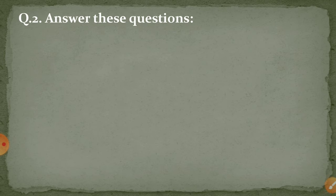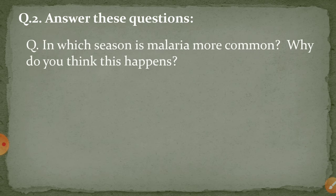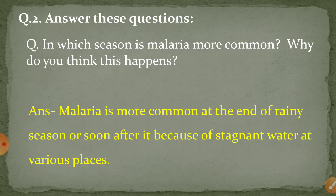Question number two: answer these questions. In which season is malaria more common, and why do you think this happens? Koon se season mein malaria zyada dikhayi deta hai? Malaria is more common at the end of the rainy season or soon after it, because of stagnant water at various places. Malaria jo hai rainy season ke end mein jaake zyada dikhayi deta hai, kyunki us waqt ruka hua paani jagah jagah ikattha milta hai.